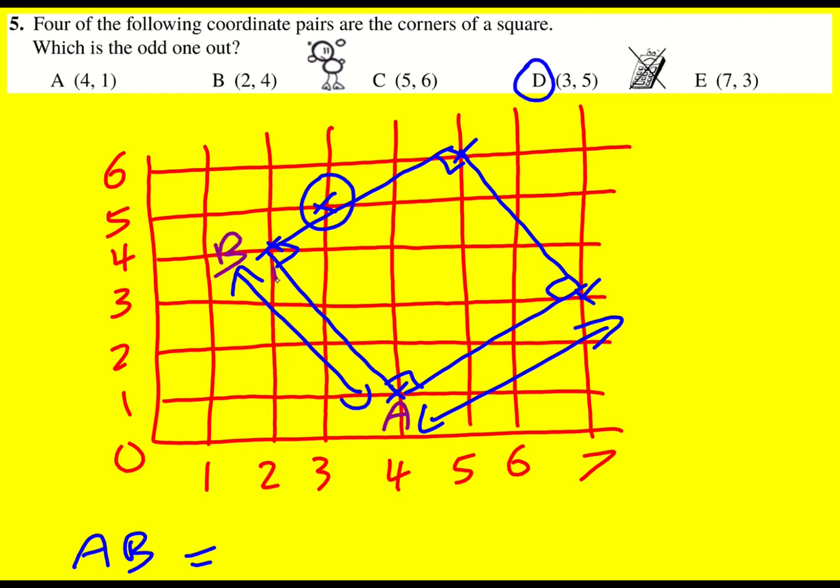So if I wanted AB, I can actually turn this into a right angle triangle, where this is now the hypotenuse, and it's going to be 2 squared plus 3 squared square rooted, which is root 13.